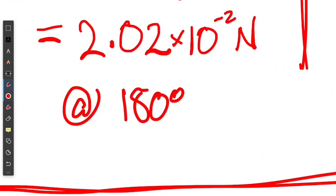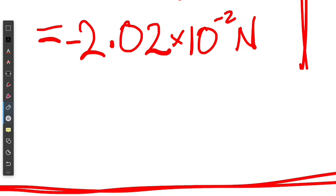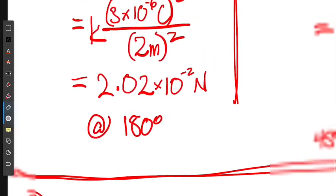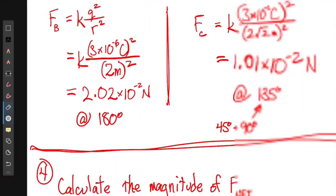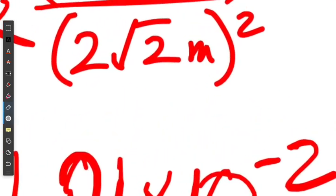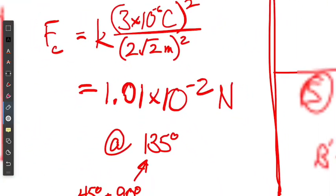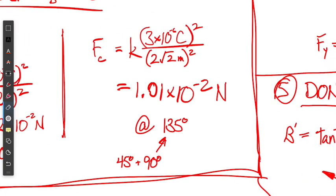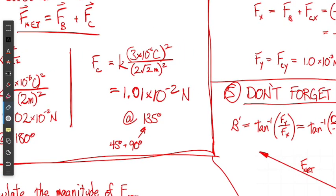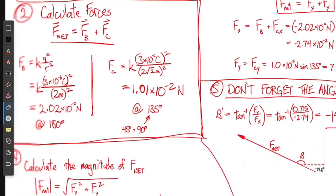I've shown the angle here — instead of writing 180 degrees I could have put a negative sign, and either would be fine. Since I've shown a positive value I'll leave my angle, because this is a vector. For the force of C, we use the distance calculated with the Pythagorean theorem and the magnitude of charge C. The direction is 135 degrees — you must show both magnitude and direction for a vector.